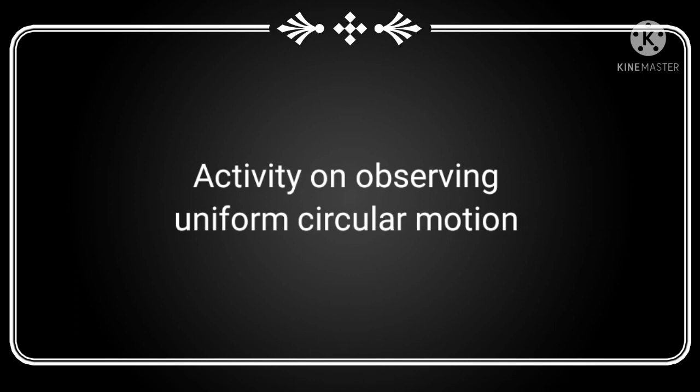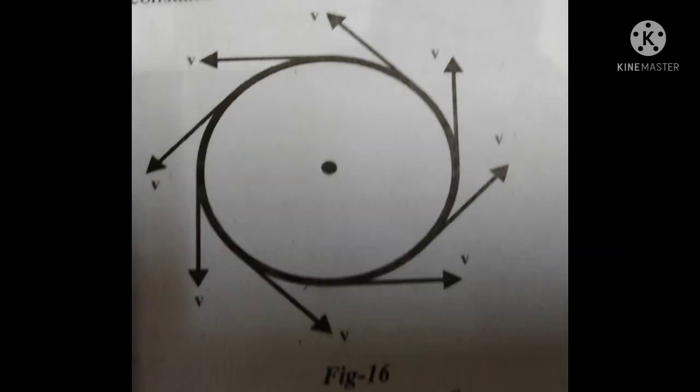Next: explain with an example where speed remains constant but velocity changes. Consider a stone tied to the end of a string, drawing a circular path. At different positions, the velocity vectors are shown as in the figure. Assume that the speed of the stone is constant. We observe that the path of the stone is a circle and the direction of velocity changes at every instant, but the speed is constant. From this activity, we conclude that though speed remains constant, its velocity changes.